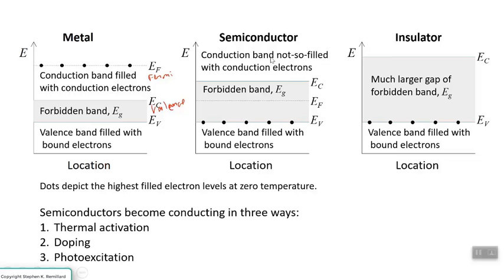Semiconductors become conducting because the electrons can get up above the band gap. There are really three ways I'll talk about here for that to happen. There's the thermal excitation, where the electron just has enough vibrational thermal energy that it sneaks up there. There's doping,